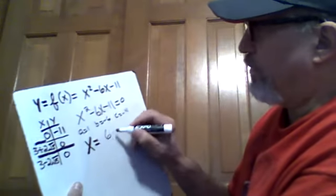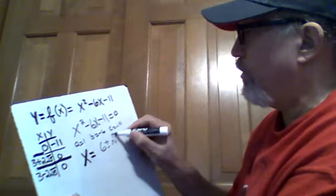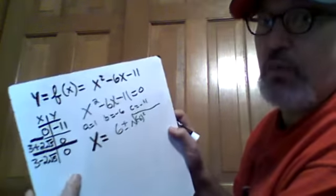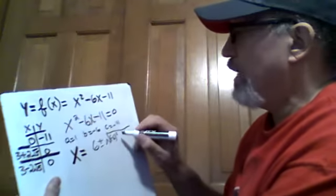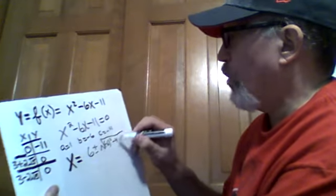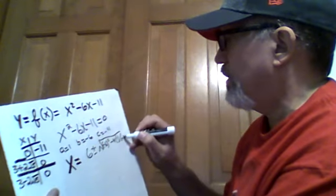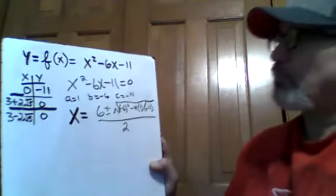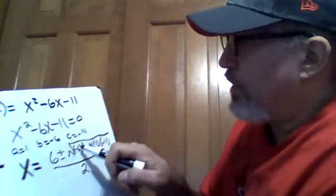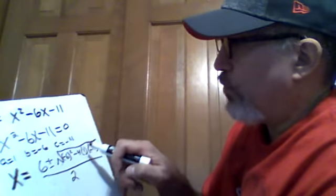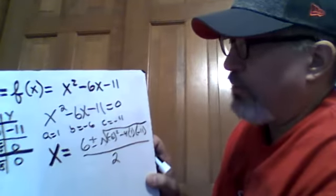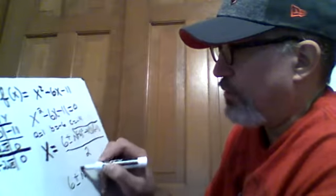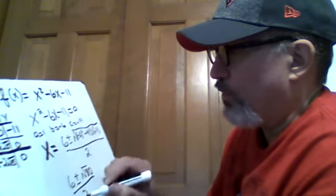The opposite of b is 6, plus or minus the square root of negative 6 squared. Make sure that when you square negative 6, you get positive 36. So we have 36 minus 4 times a times c, all over 2a. Since a is 1, the denominator is 2. Inside the square root sign: 36, and then negative 4 times 1 times negative 11, that's 36 plus 44. So we get 6 plus or minus the square root of 80, all over 2.